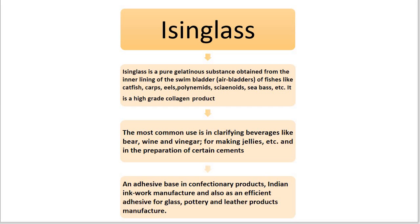There are many uses of isinglass. The most common use is in clarifying beverages like beer, wine, and vinegar, and for making jellies and certain pharmaceutical substances. Isinglass is also effective in reducing suspended solids in beer at an increased rate of filtration — near about 3,000 to 11,000 liters. Other uses include as an adhesive base in confectionery products, in Indian ink work manufacture, and as an efficient adhesive for glass, pottery, and leather product manufacture. Isinglass products having moisture content less than 8% find preference for industrial purposes.